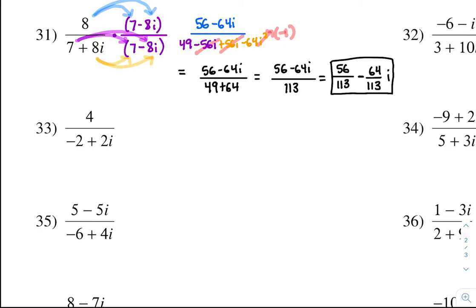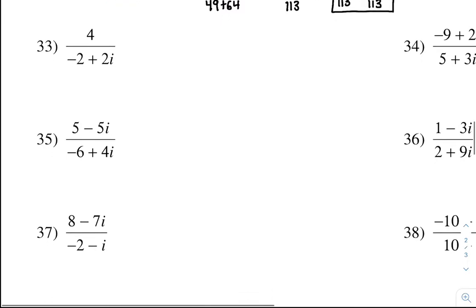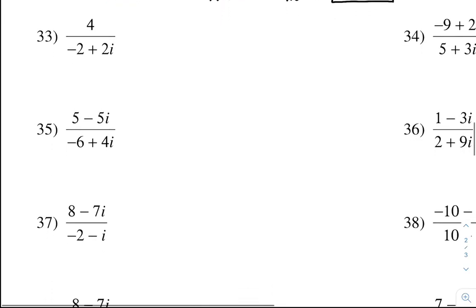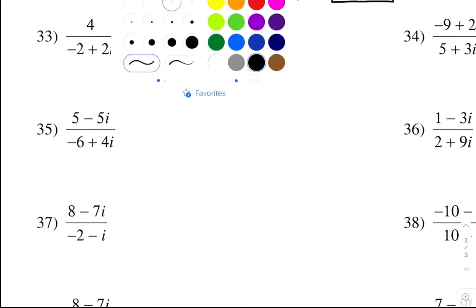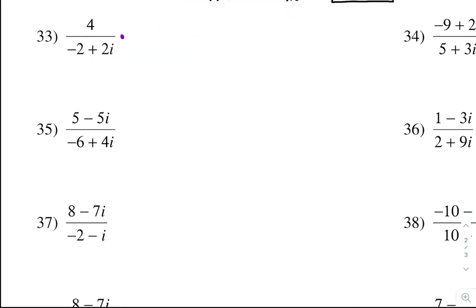Okay, problem 33. We've got to multiply top and bottom by the conjugate. The denominator is negative 2 minus 2i, so remember the conjugate is the opposite of that sign — negative 2 minus 2i.